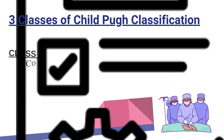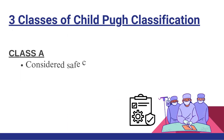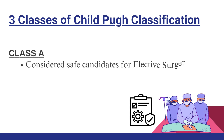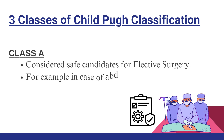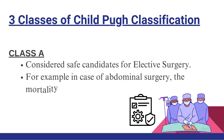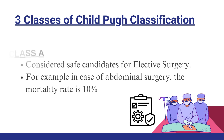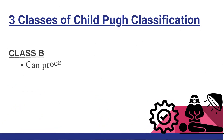We will now discuss the details of these three classes. Class A: this class is considered safe candidates for elective surgery. For example, in case of abdominal surgery, the mortality rate is 10%.